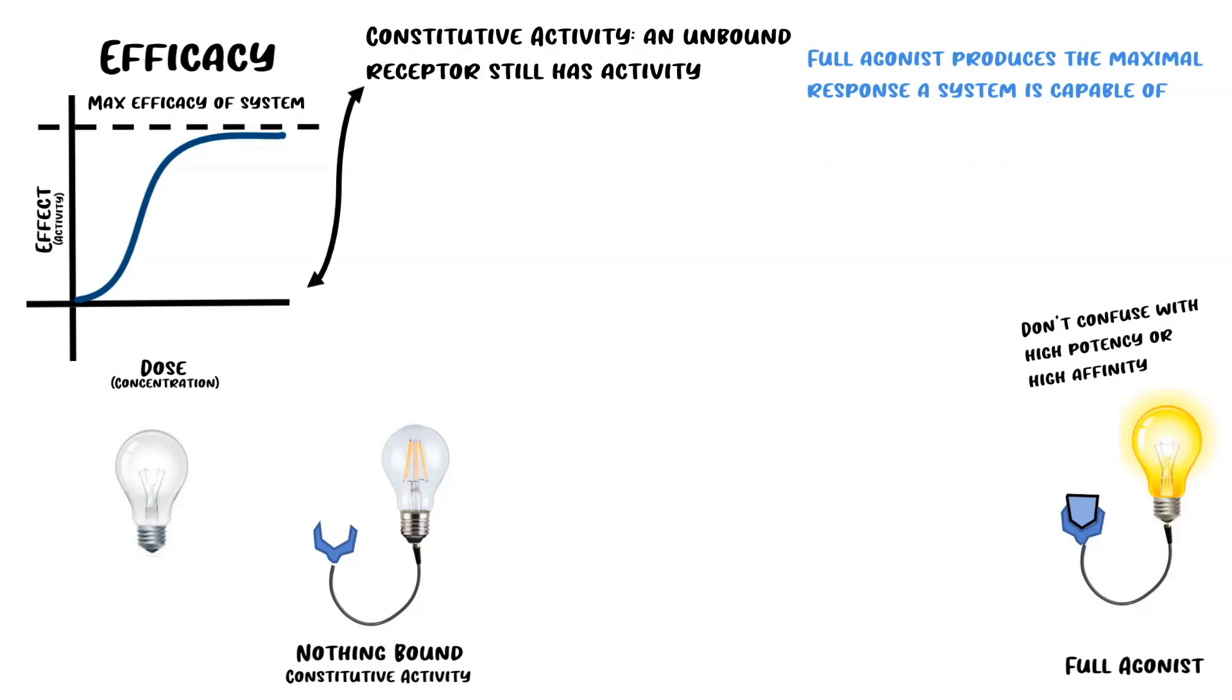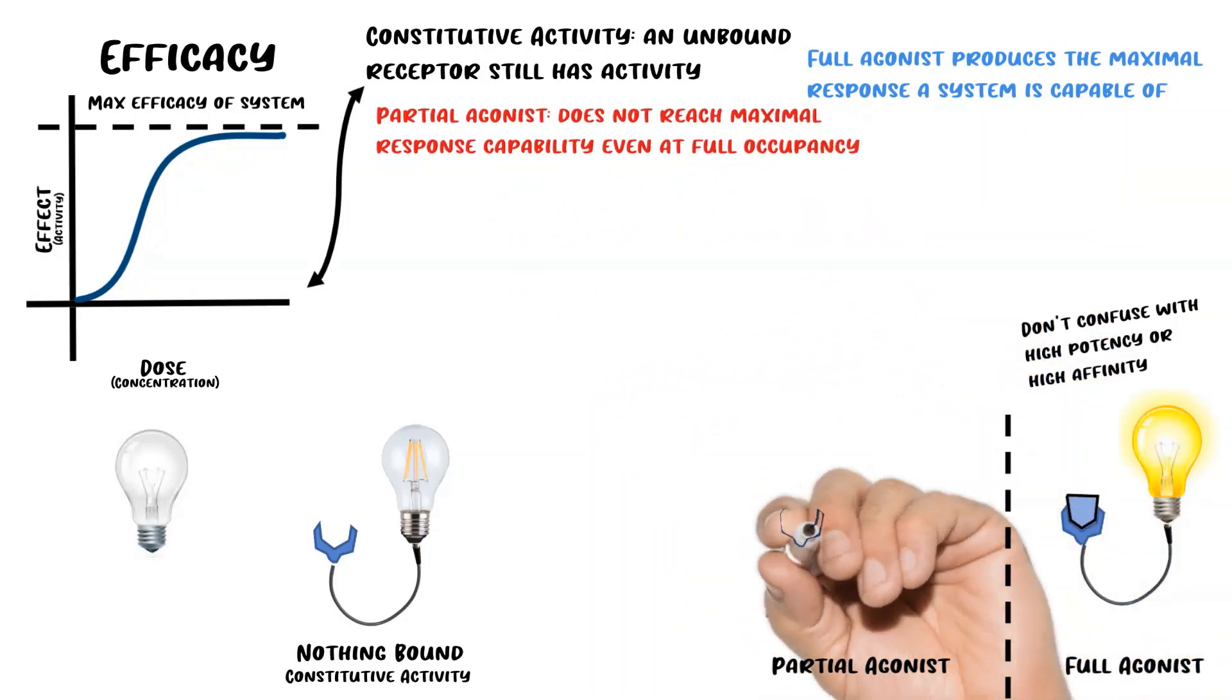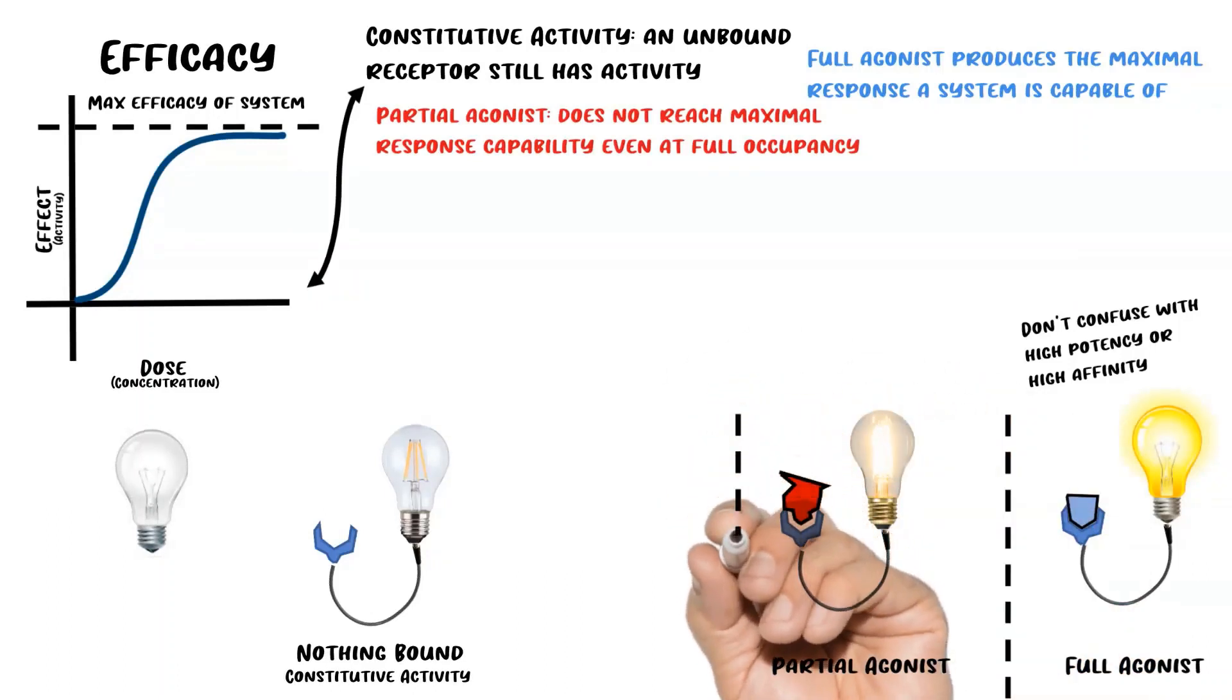This brings us to a partial agonist. A partial agonist can never achieve the maximum response that the system is capable of because its efficacy is lower than that of a full agonist. When we hook the partial agonist up to a light bulb, we can see that it's emitting more light compared to when nothing's bound, but it's not emitting quite the same amount of light as the full agonist.